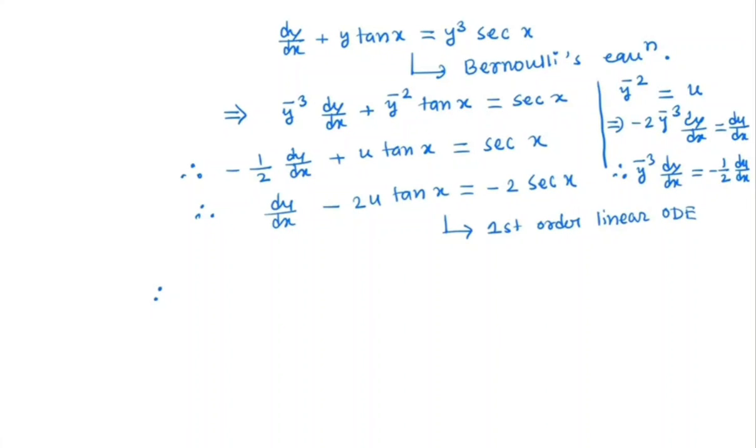So we find integrating factor I(x) equal to e to the power integral of minus 2 tan x dx. So e to the power minus 2 log sec x, which is e to the power log cos^2 x, equal to cos^2 x.